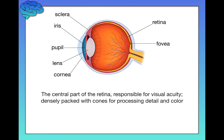Next, we have the fovea, which is a particularly important part of the retina. The fovea is the central part of the retina — it corresponds to whatever you're directly looking at. So in this video, if you're looking directly at the word 'fovea' on the screen, it is hitting your fovea. The fovea is responsible for visual acuity and color vision. The reason it achieves such detail is because it's densely packed with cones, which are specialized for processing detail and color.